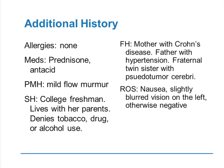Of note, she has no allergies and has only been on prednisone and an acid-blocker owing to prednisone-causing GERD. Past medical history is notable for a mild flow murmur she's had since infancy. Socially, she is a college freshman who has traditionally done very well in school but is not doing well in her freshman year due to all of this. She lives with her parents and denies any tobacco, drug, or alcohol use. Her mother has Crohn's disease, her father has hypertension, and she has a fraternal twin sister with pseudotumor cerebri. Currently she has only nausea, slightly blurred vision on the left, and otherwise no neurologic symptoms.